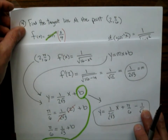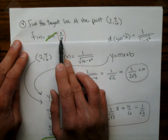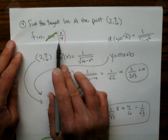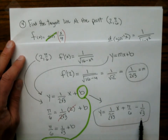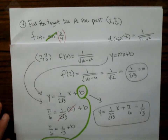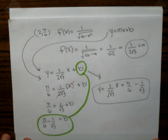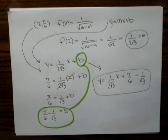That's the tangent line at the point (2, pi over 6). In the classroom I might plot that on Desmos, put the point and the line on there, and you'd see the tangent line. That concludes section 3.10. We'll be back some other time — you guys have a good day.